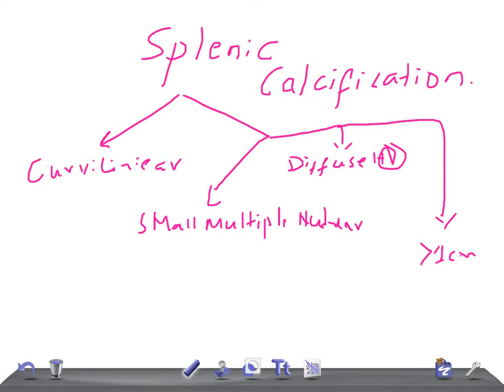For curvilinear splenic calcification, there are three causes to remember. First is splenic artery atherosclerosis, which also includes splenic artery aneurysm. Second is hydatid cyst. Third is post-traumatic causes.